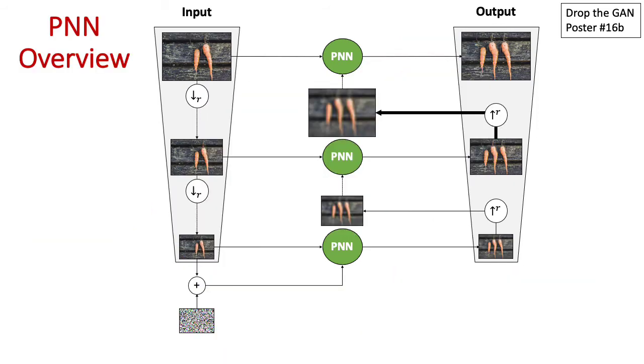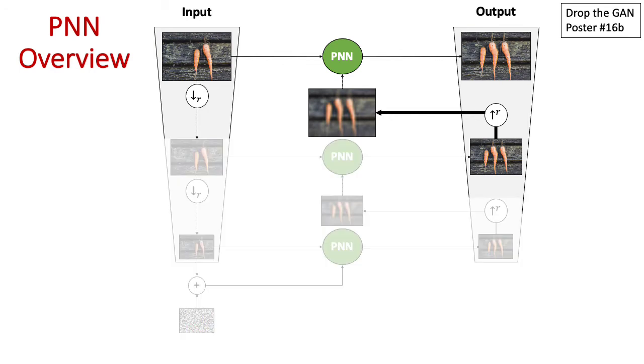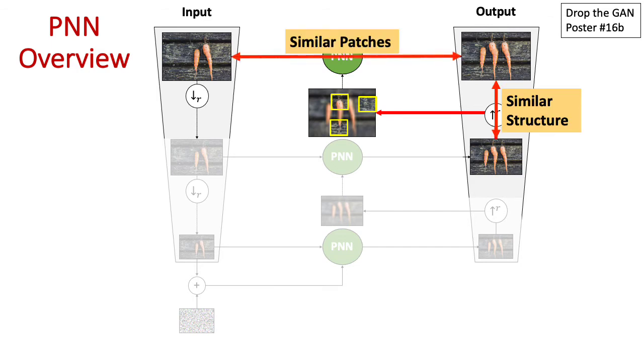But what does this PNN module actually do? Let's focus on a single scale. It takes the upscaled output from the coarsest level and replaces its patches with their nearest neighbors in the input. Finally, we get an output with similar structure to the previous scale and similar patches to the input.